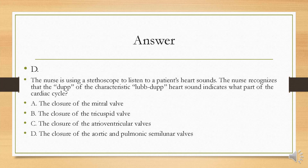Your answer is D. The DUP indicates closure of the aortic and pulmonic semilunar valves. The atrioventricular valves — which are your mitral and tricuspid valves — their closure is indicated by the lub sound.